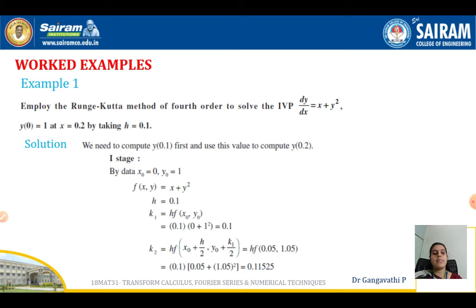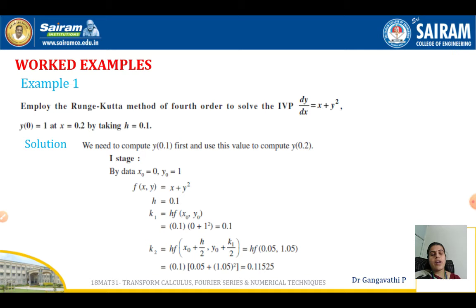Let us understand better by solving one problem. Consider example 1: employ the Runge-Kutta method of fourth order to solve the initial value problem dy/dx = x + y², with initial condition y(0) = 1, at x = 0.2, taking h = 0.1. The given values are x₀ = 0, y₀ = 1, and we need to find y at x = 0.2 with step length h = 0.1, so we go from 0 to 0.2 in steps of 0.1.